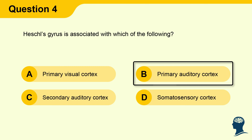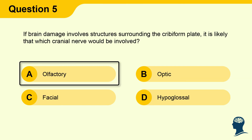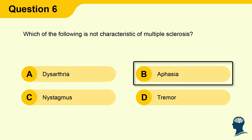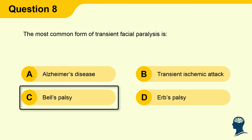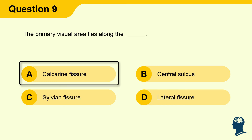Question 4: Heschl's gyrus — answer B, Primary auditory cortex. Question 5: Brain damage involving the cribriform plate — answer A, Olfactory. Question 6: Not characteristic of multiple sclerosis — answer B, Aphasia. Question 7: Amyloid plaques and neurofibrillary tangles — answer A, Alzheimer's disease. Question 8: Most common transient facial paralysis — answer C, Bell's palsy. Question 9: Primary visual area — answer A, Calcarine fissure.